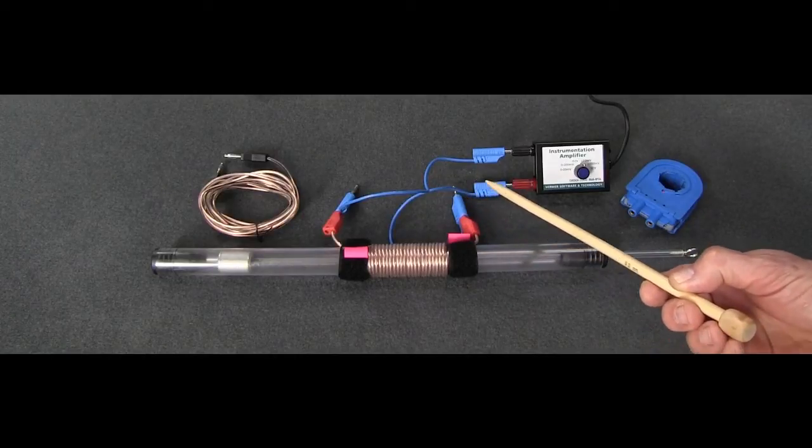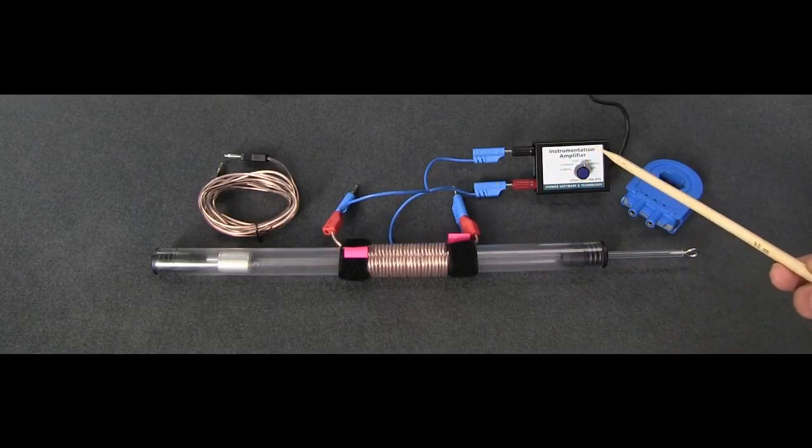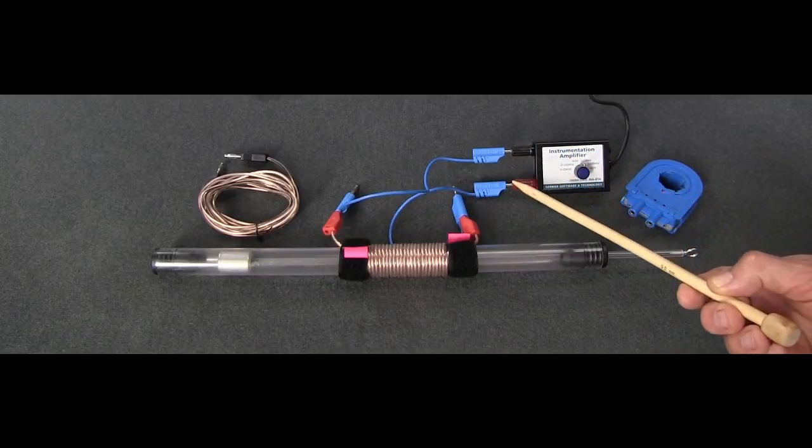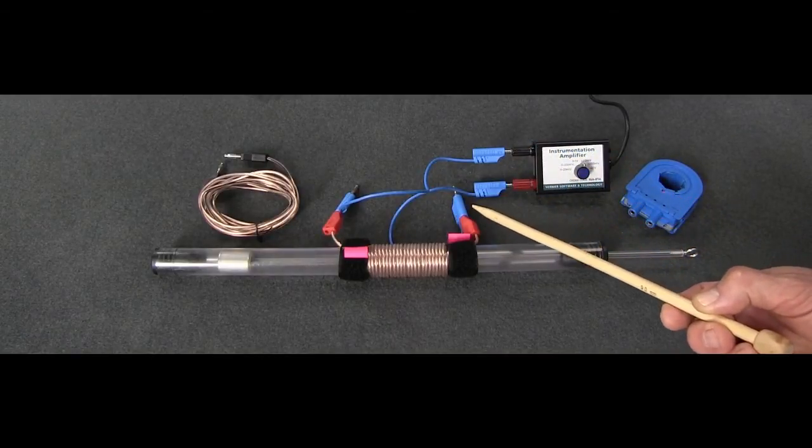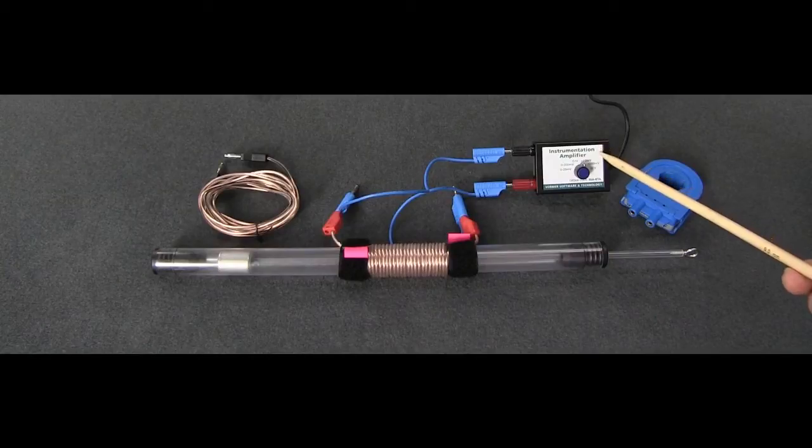What I've done is I've connected that to an instrumentation amplifier, which will measure the very small voltages coming from the coil. The instrumentation amplifier is connected to my data logger.